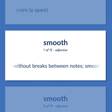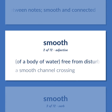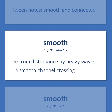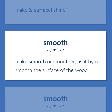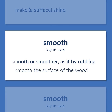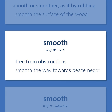Music: without breaks between notes, smooth and connected. Of a body of water, free from disturbance by heavy waves. A smooth channel crossing. Make a surface shine. Make smooth or smoother, as if by rubbing. Smooth the surface of the wood. Free from obstructions. Smooth the way towards peace negotiations.